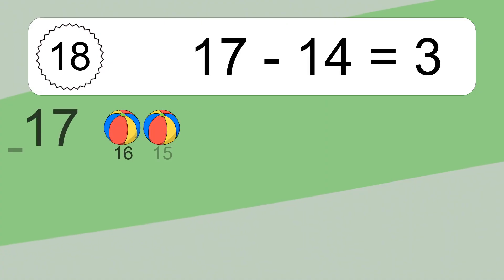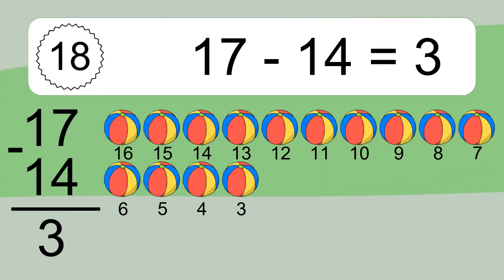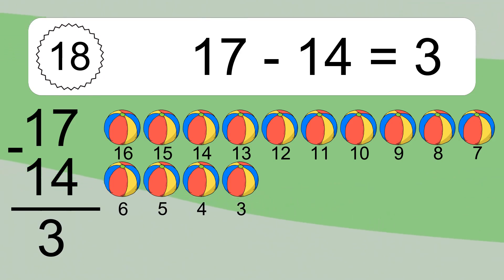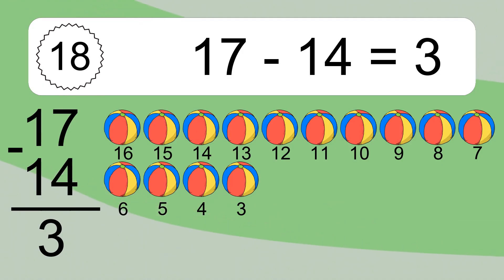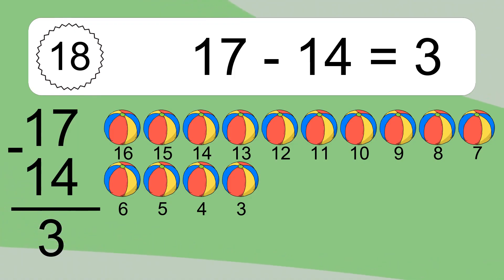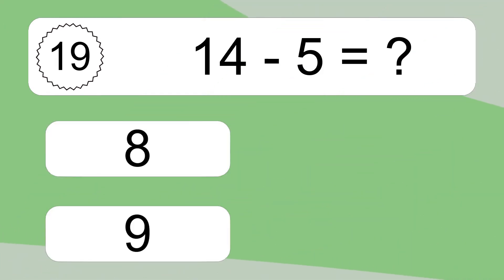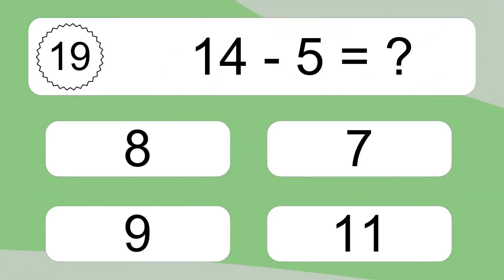17 minus 14 equals 3. Let's count it: 16, 15, 14, 13, 12, 11, 10, 9, 8, 7, 6, 5, 4, 3. 14 minus 5 equals what?